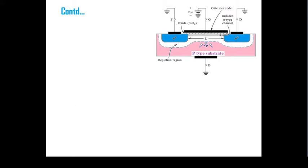In the last lecture, we covered how when we give a positive gate voltage VGS, that positive gate voltage causes the free holes in a P-type substrate to be pushed downward, and it makes an uncovered region — that is our depletion region.